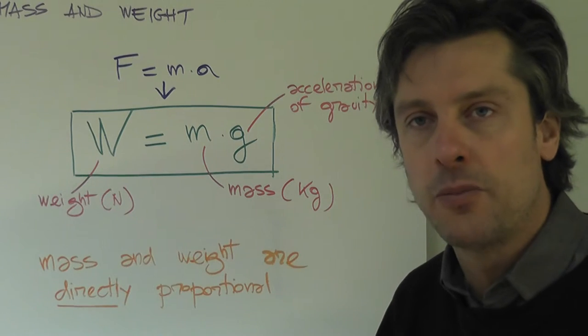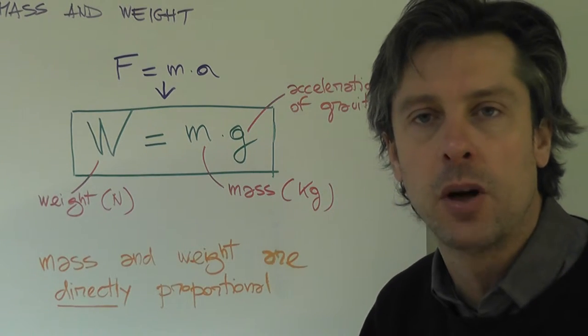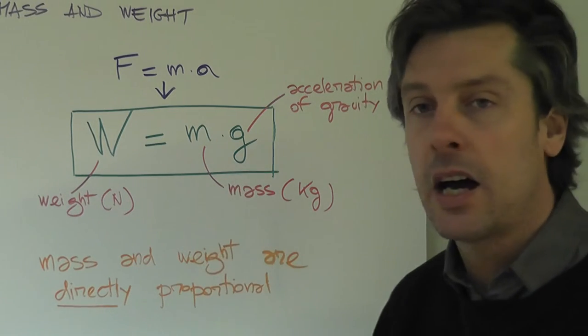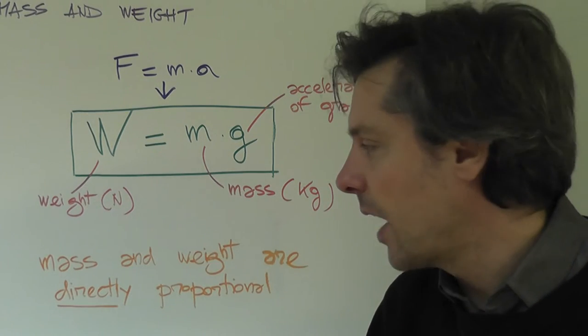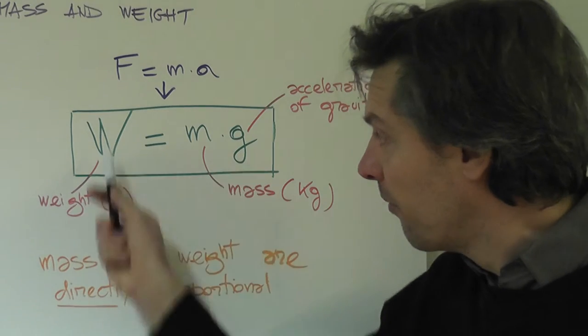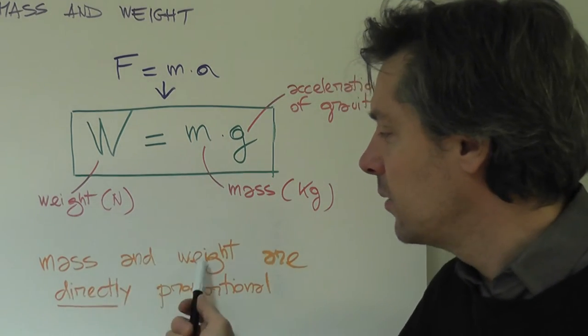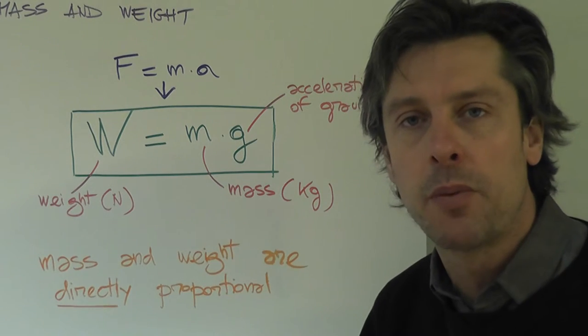So to get the weight of an object in Newtons you just have to multiply the mass of that object in kilograms times the acceleration of gravity. From this formula also comes out that mass and weight are directly proportional.